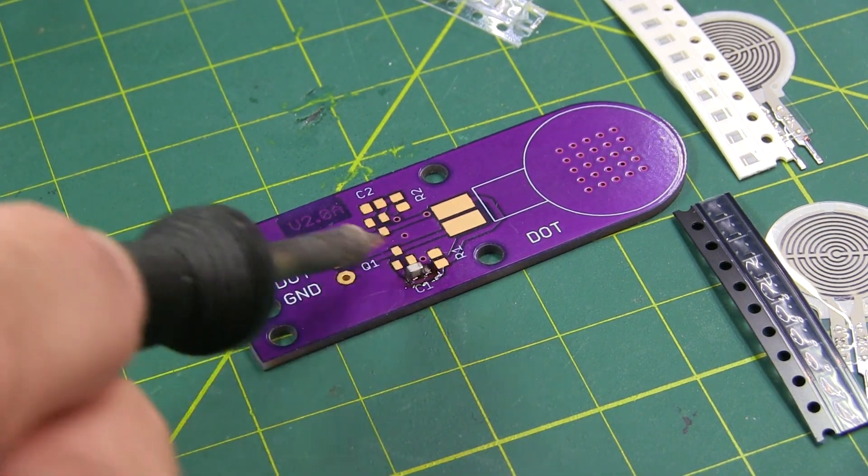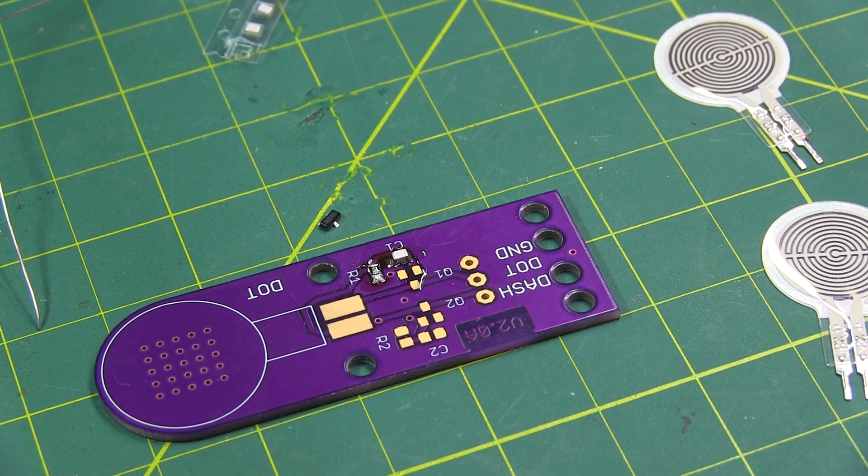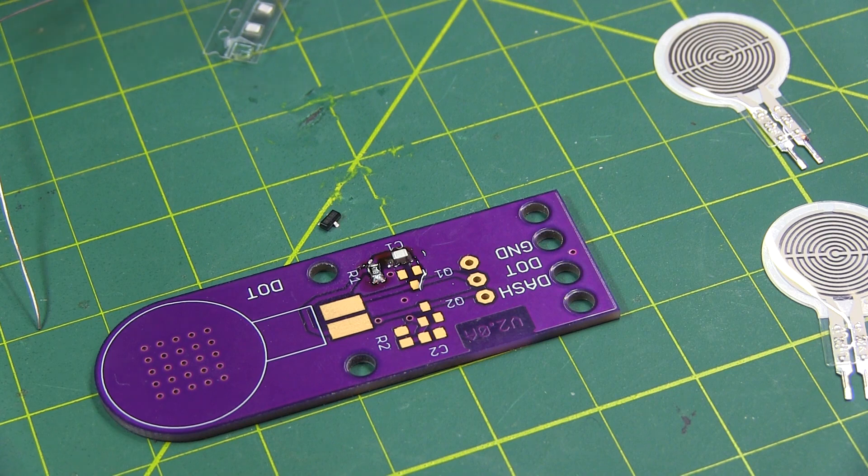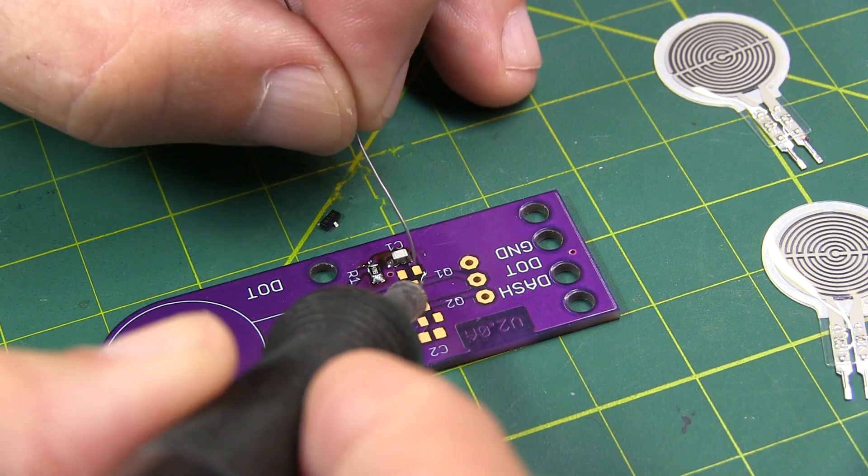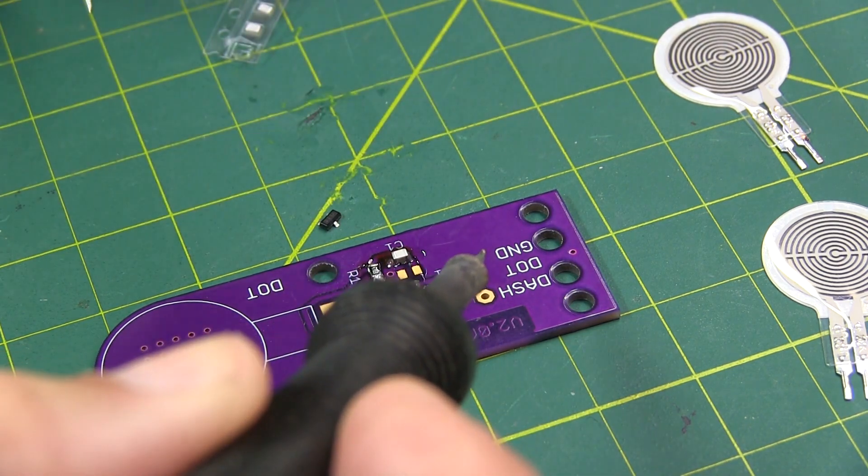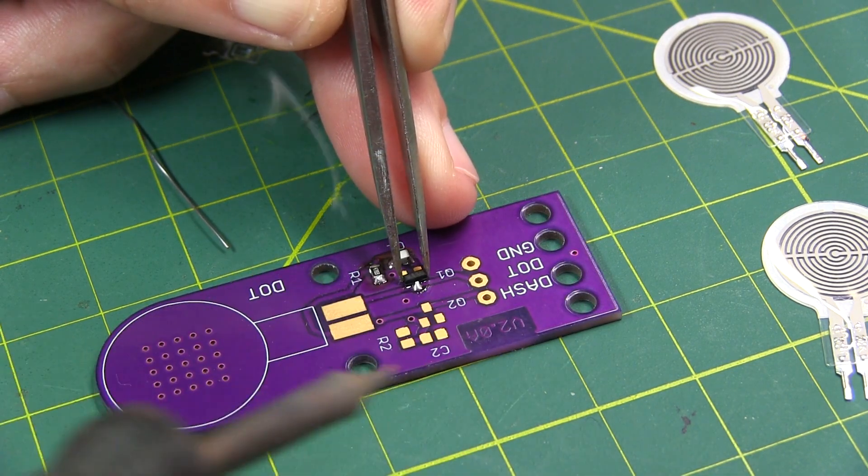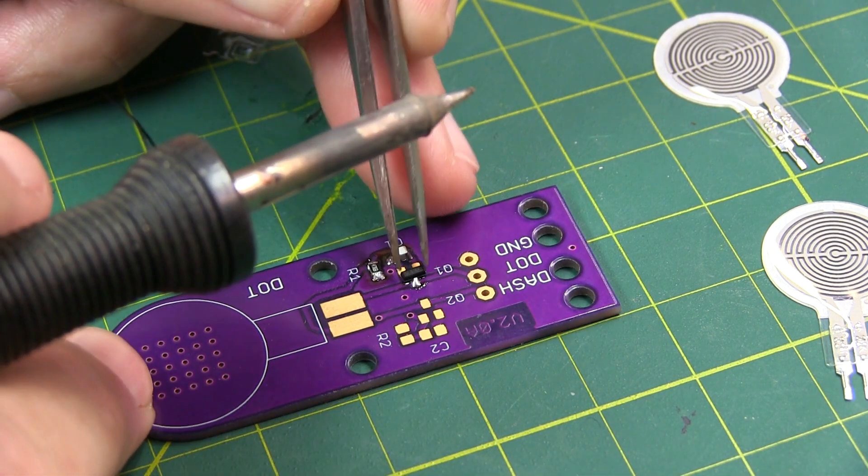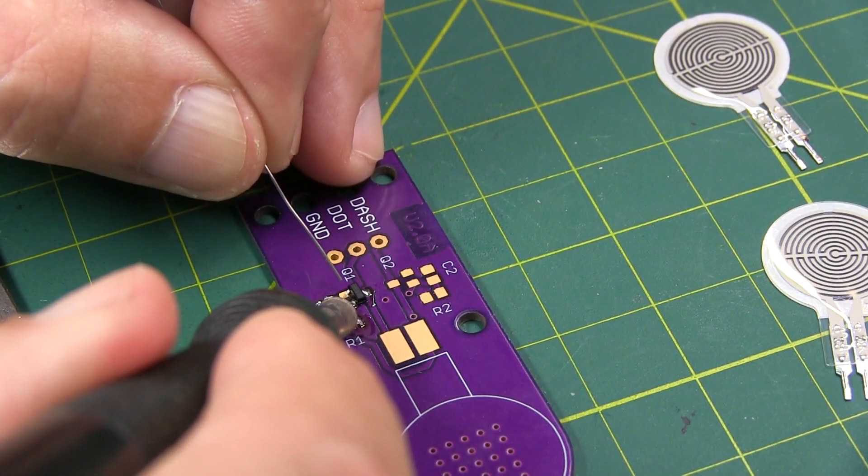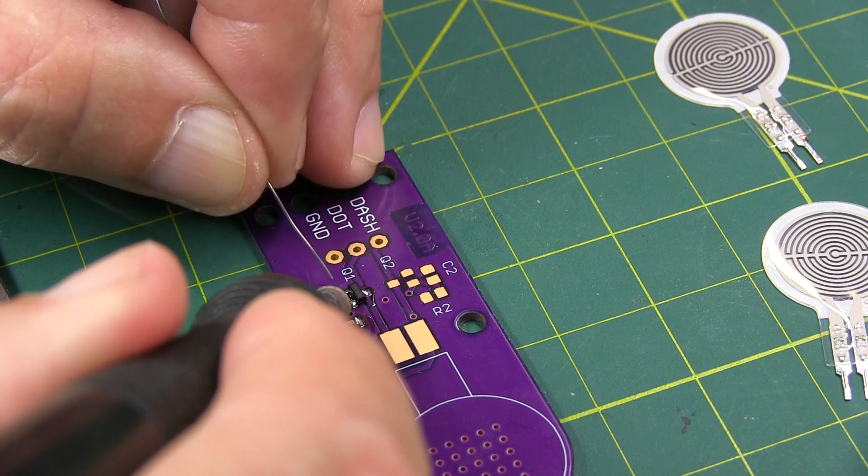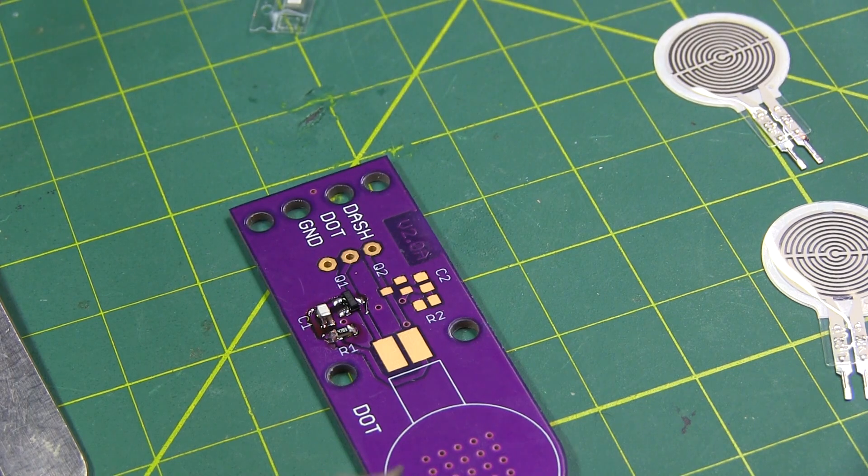We'll do the same thing for the resistor and the MOSFET, and do the same for the other side. Now for the MOSFET, it's probably easier to start with tinning one of the pads, and I'll typically do that on the lone pad on one side and then drop the part into that one and then solder the other two ends. I've got the one side in place and I want to solder these other two sides. And one side is done. Do the same thing with the other side.